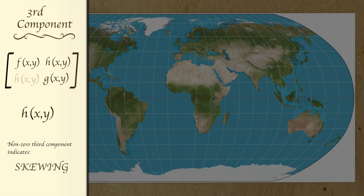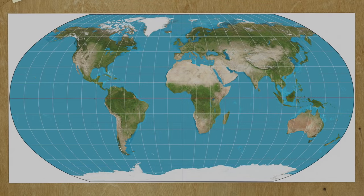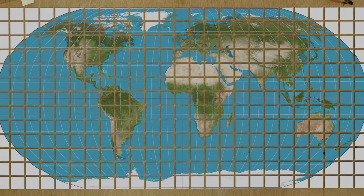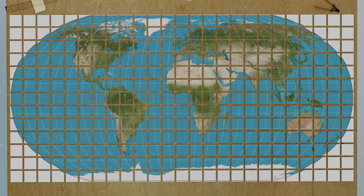This would indicate that, in addition to needing to be stretched or shrunk, pieces across the map would need to also be skewed before being rearranged into their new surface.